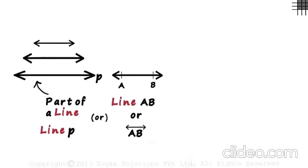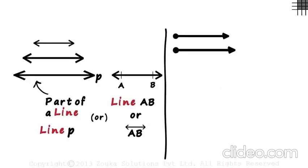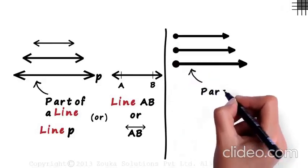So what is a ray? A ray starts at one point and goes on indefinitely in one direction. Just like for lines, even rays can be drawn in different ways. What we draw is just a part of a ray.